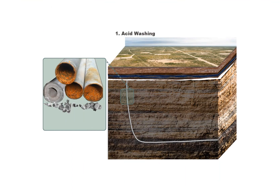The first type of acid treatment is acid washing. In this case we inject acid and keep it inside the tubulars. It is important to point out that we do not intend formation treatment. Our objective during acid washing is tubular and wellbore cleaning. Normally we are removing inorganic scale,